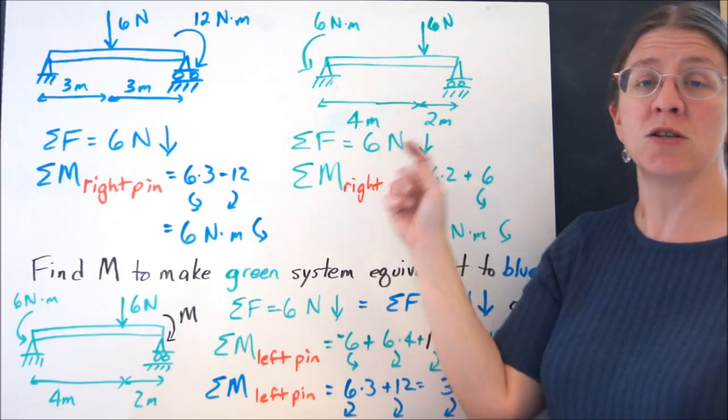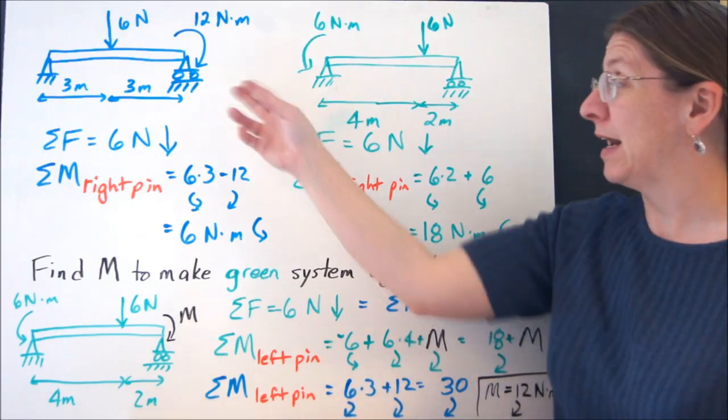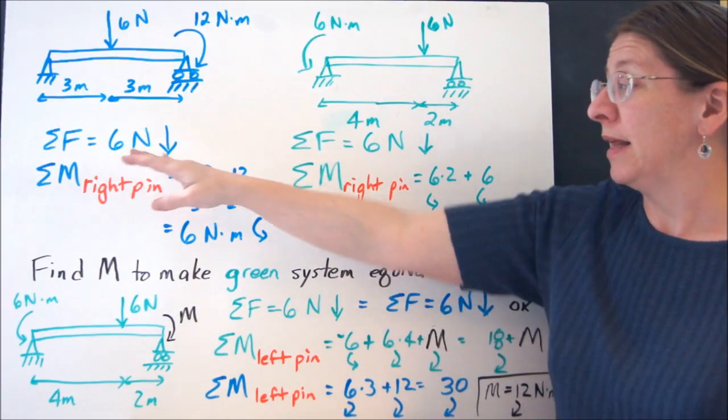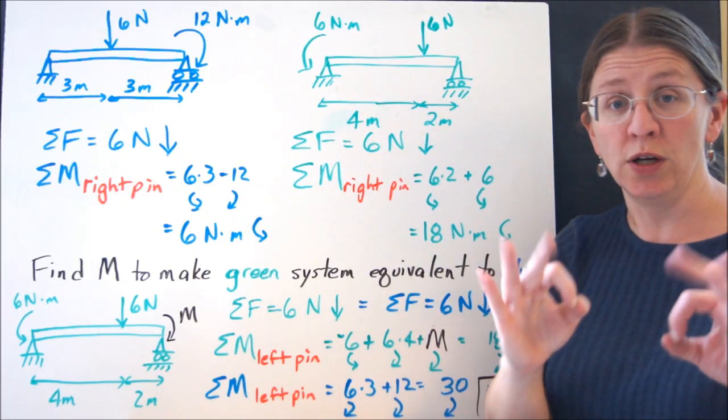I need to know if these are equivalent as far as the equations in statics go. Can I replace one with the other? Now, the sum of the forces here is 6N down, sum of the forces here is 6N down. So far, so good.